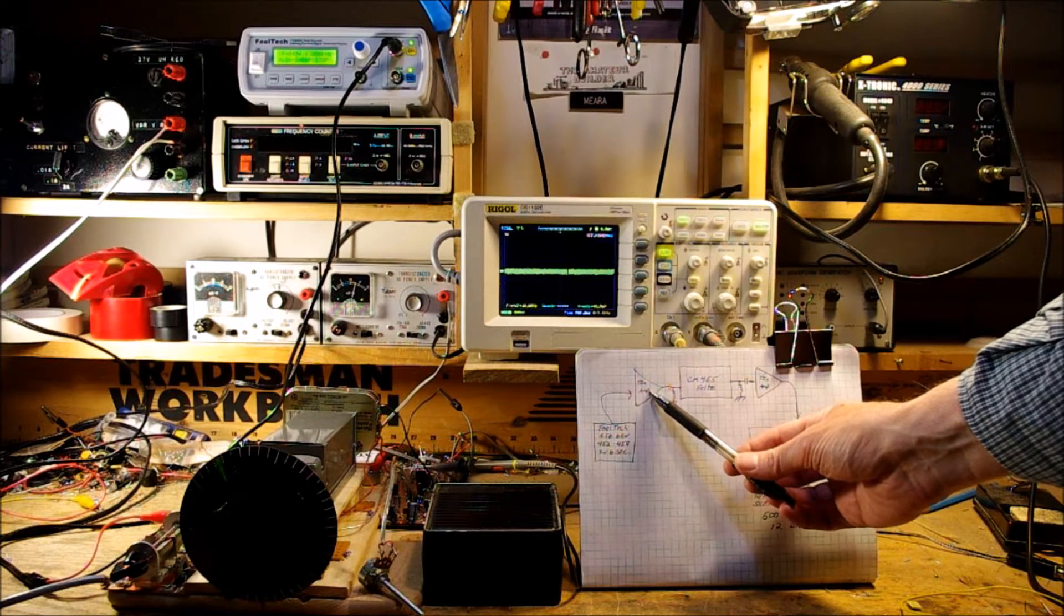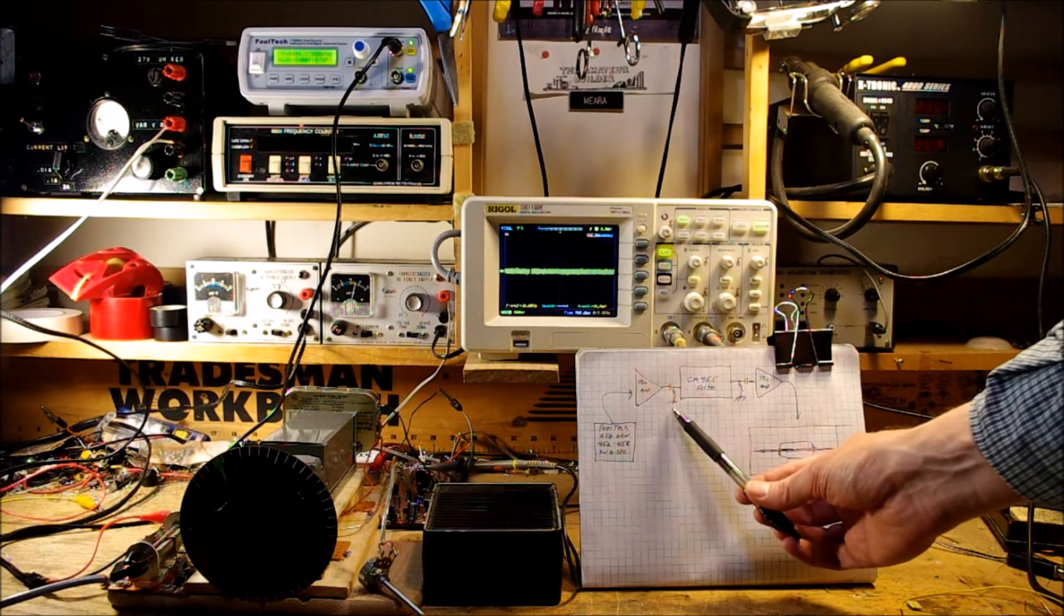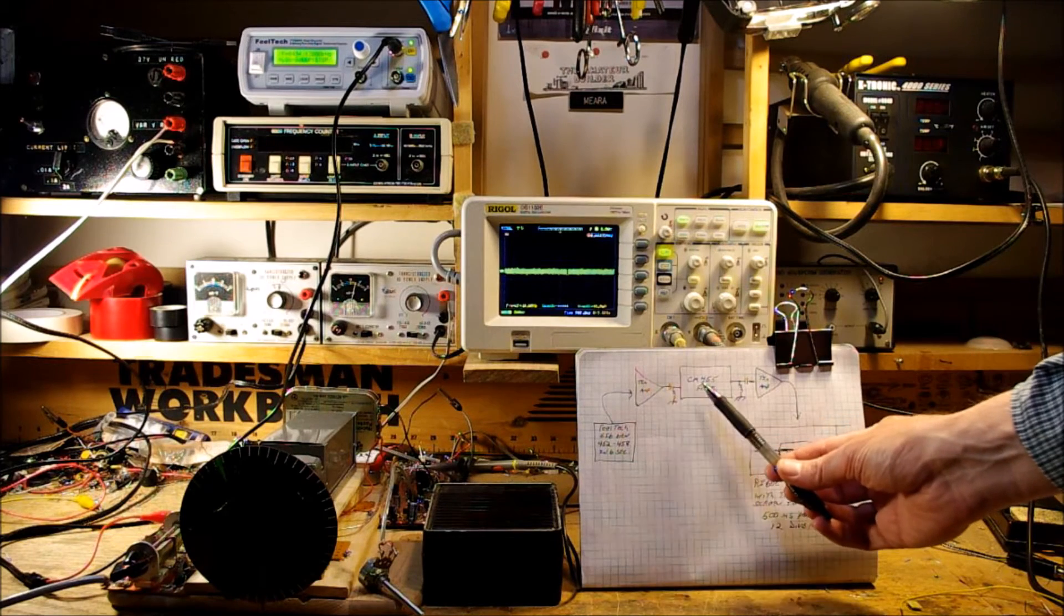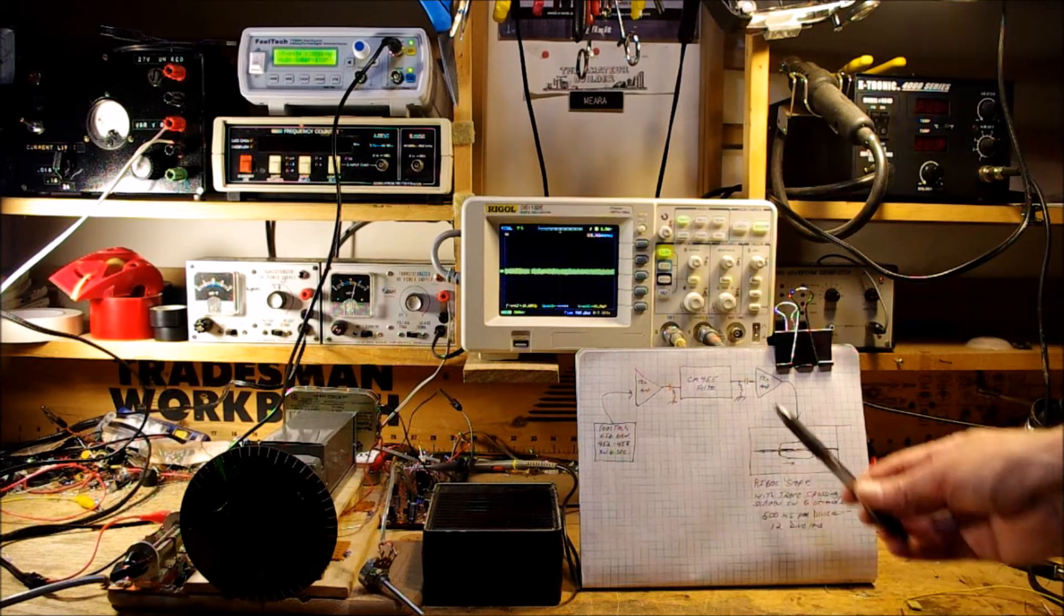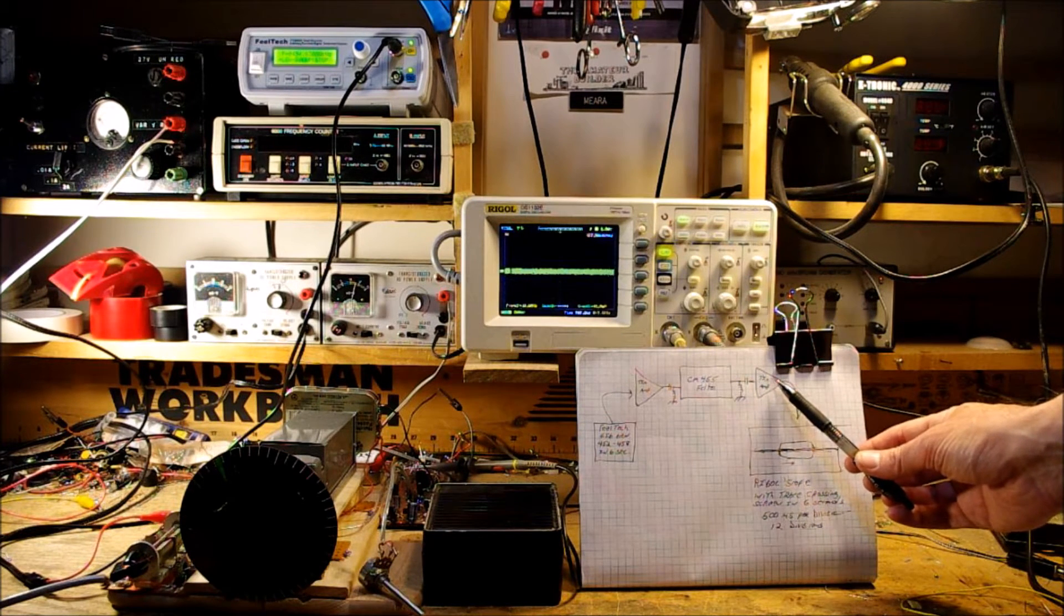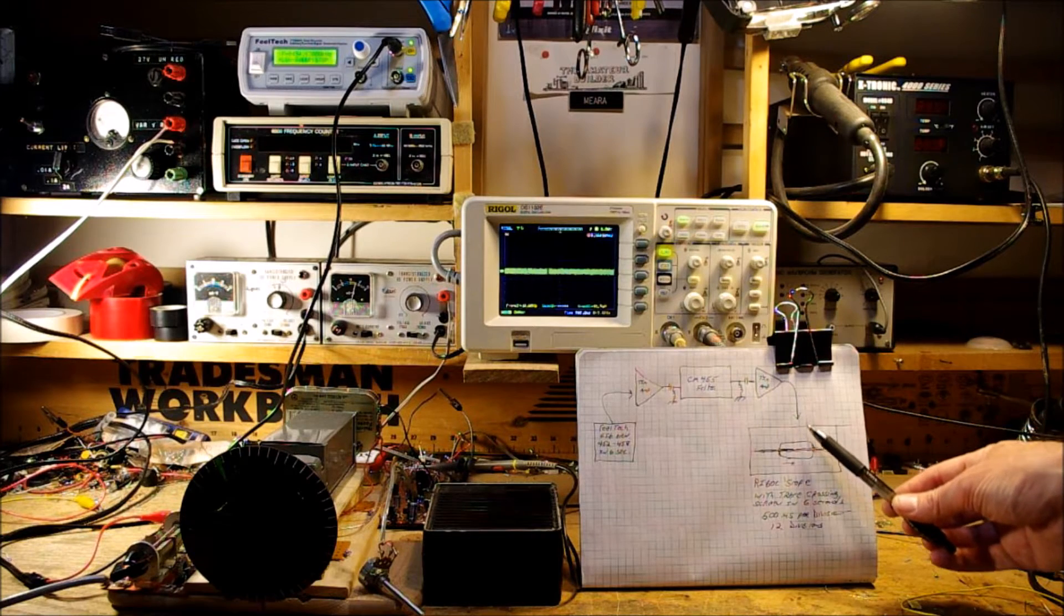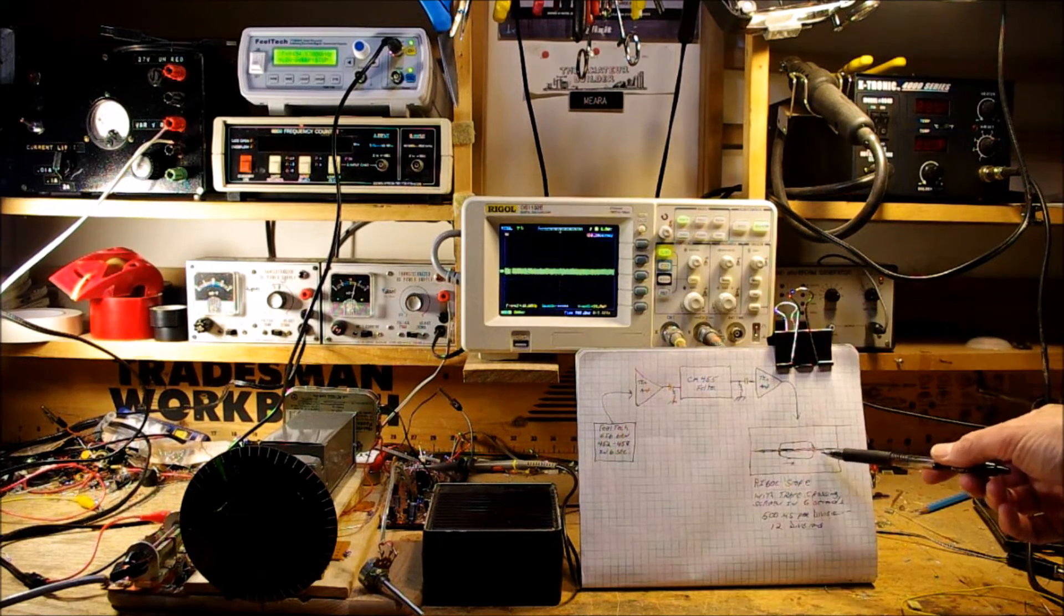It goes into a termination insensitive amplifier that precedes the filter. I have an L network to take care of some impedance matching between the amplifier and the filter. On the other end I have an identical impedance matching network and another termination insensitive amp. The termination insensitive amp goes to the input of my Rigol oscilloscope.